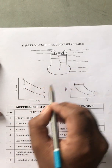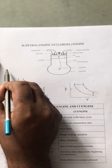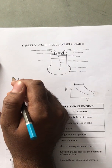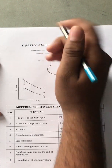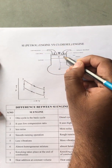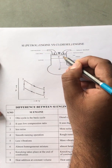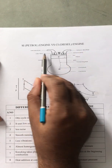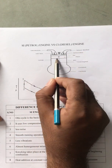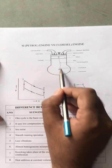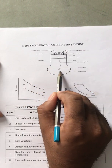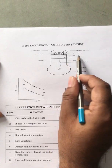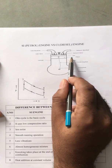Four stroke means suction, compression, expansion, exhaust - four strokes. I have taken a four-stroke engine. This is the inlet valve, this is the exhaust valve, piston, cylinder, crankshaft, and the crankcase. This is the crankshaft, connecting rod, with bottom dead center and top dead center. This is the piston.